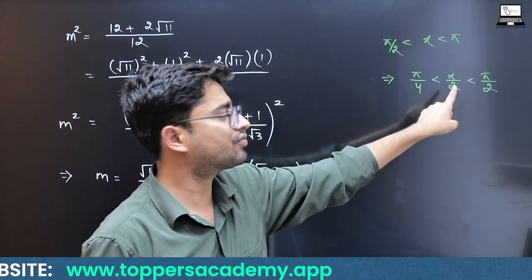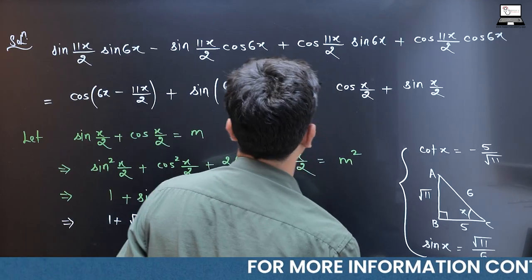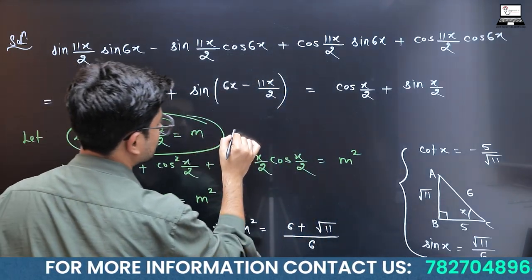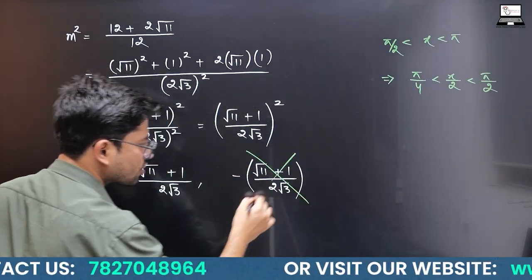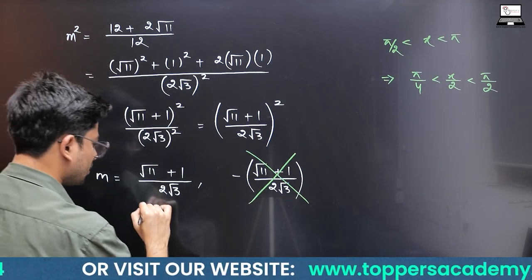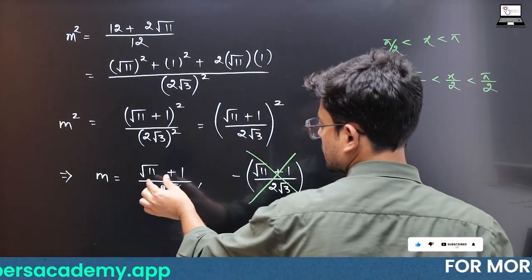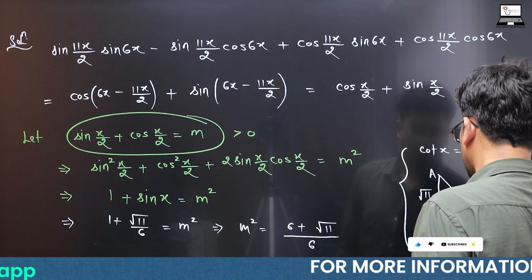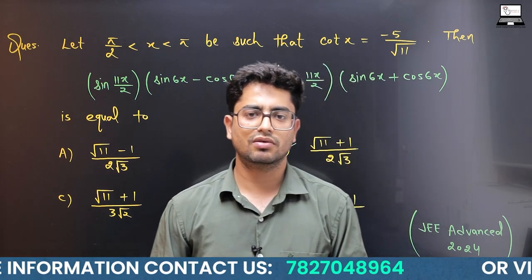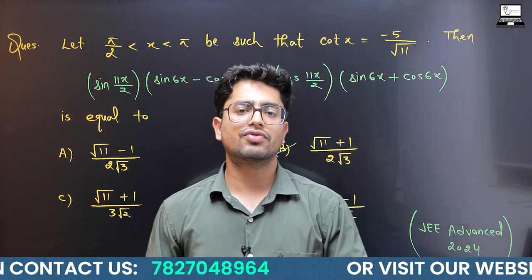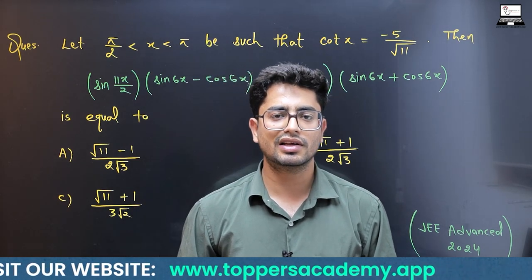Therefore the negative value is not acceptable, and the final answer is m = (√11 + 1)/(2√3). This corresponds to option B for the given JEE Advanced 2024 question. In the next video we'll discuss more questions on previous year papers — thank you everyone.